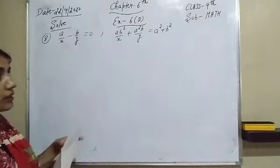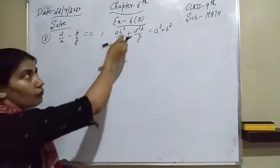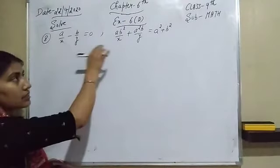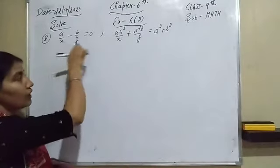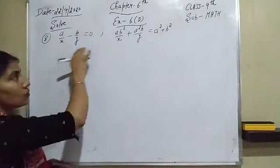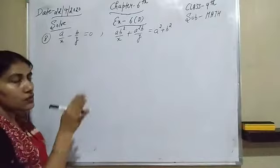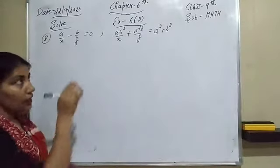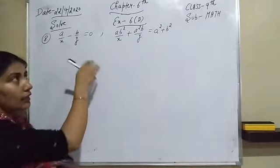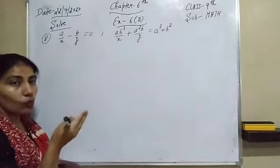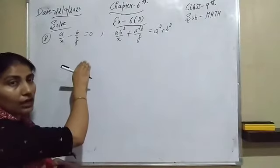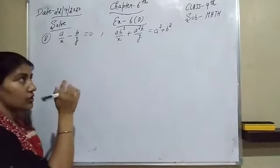These types of equations are of worksheet 6D only. For these types of questions, what we have to do is put 1/x equal to 'a' and 1/y equal to 'b'. But in this question, 'a' and 'b' are already used in the equations. So if the variables are already used, you have to put any other variable — you can take u or v, but you can't take a and b.